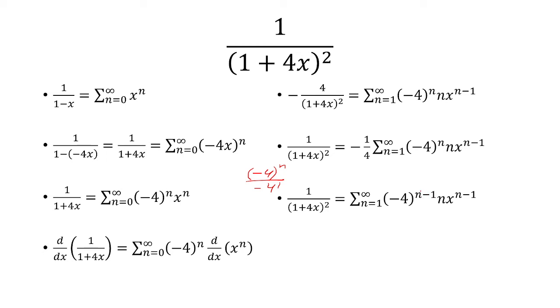And now the negative 4 to the n minus 1 can be broken up into negative 1 times 4. So let me just show you this step. Negative 4 is negative 1 times 4.